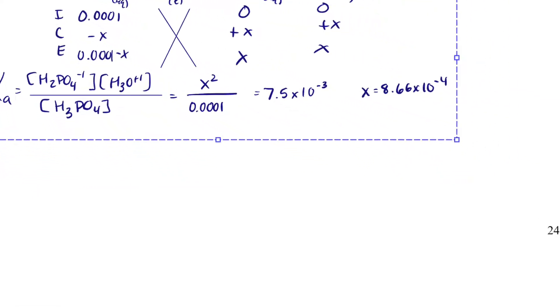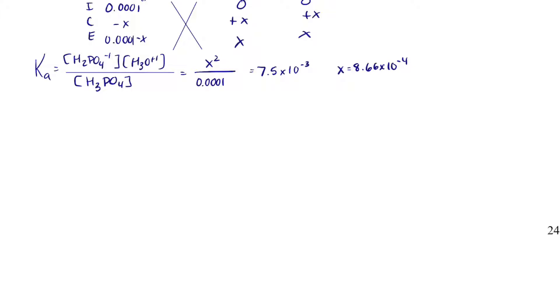However, what ends up happening is now we have H2PO4 with a 1 minus charge, and it can react with water. And I can set up a rice table. The initial concentration of H2PO4, I can get that from up here. So this is like a stepwise process. That is just x, and x was 8.66 times 10 to the minus 4.